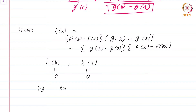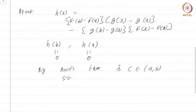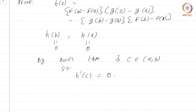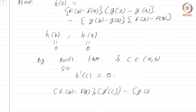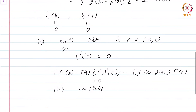Since h(a) = h(b) = 0, we do not even need the full force of Lagrange's mean value theorem — just by Rolle's theorem, there exists some c in (a, b) such that h'(c) = 0. Computing h'(c) gives [f(b) − f(a)]·g'(c) − [g(b) − g(a)]·f'(c) = 0, and this concludes the proof. The ratio form assuming g' is never 0 follows immediately.